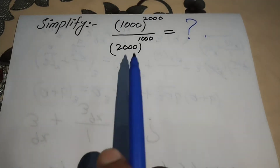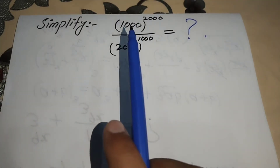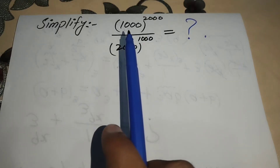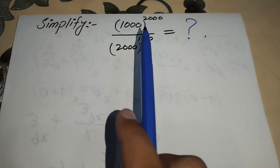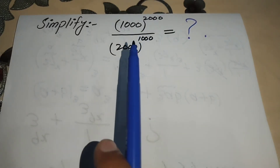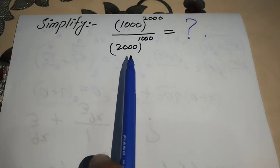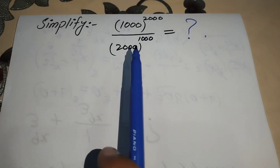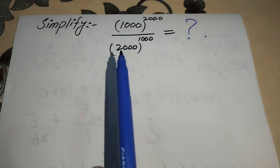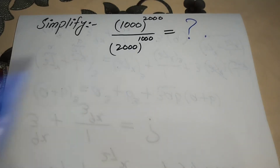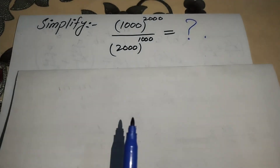Here is the question statement: the numerator is 1000 to the power 2000, and the denominator is 2000 to the power 1000. We will simplify this expression by using the exponent laws.